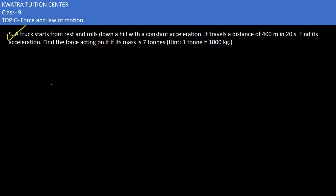In the fifth problem, it says that a truck starts from rest, which means the initial velocity would be zero. Then it says that it rolls down a hill with a constant acceleration. It travels a distance, defined by s, which is 400 meters. The time is 20 seconds. Find its acceleration. Find the force acting on it if the mass is 7 tons. So first of all, we need to find the acceleration.